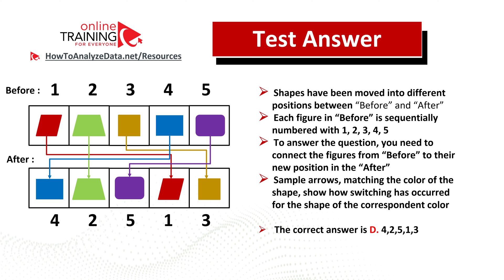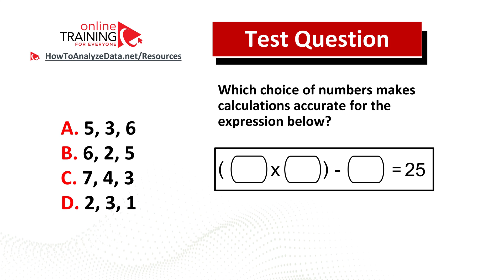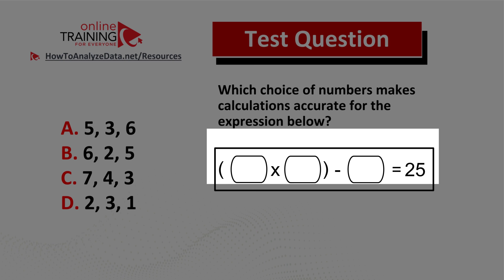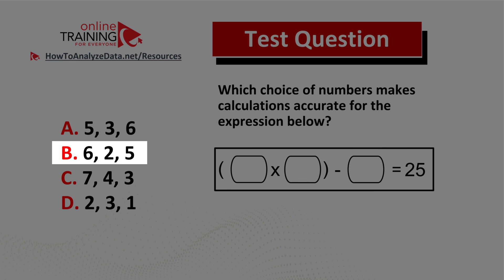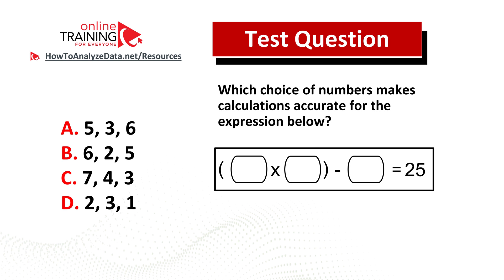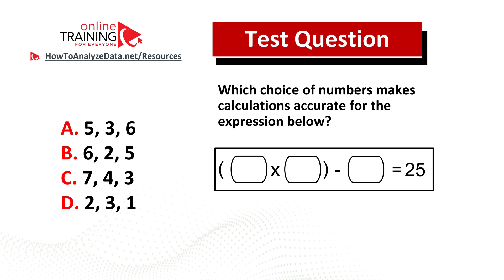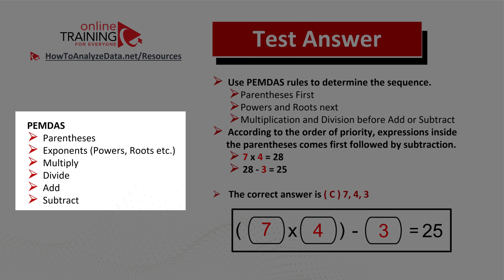Here is an interesting question which tests your ability to do mental calculations. Which choice of numbers makes calculations accurate for the expression below? You're presented with an expression where two items in parentheses are multiplied, then a third number is subtracted, with the result equal to 25. The four choices are: choice A five three six, choice B six two five, choice C seven four three, and choice D two three one. You cannot use a calculator. Now might be a good time to pause this video. To get the solution, remember one word: PEMDAS — parentheses, exponents, multiply, divide, add, subtract.